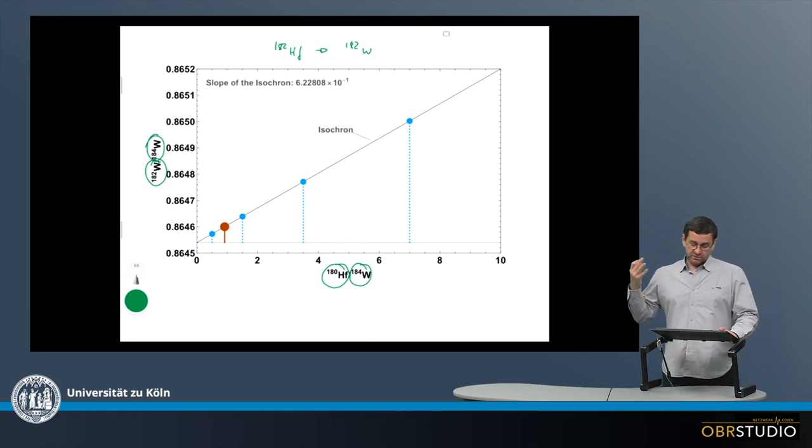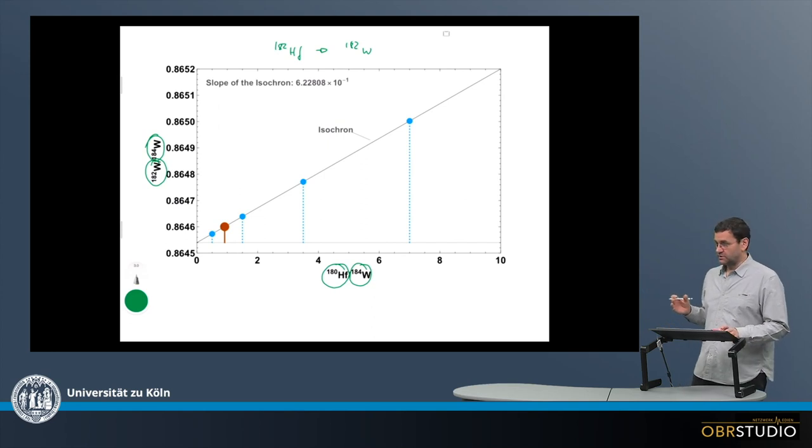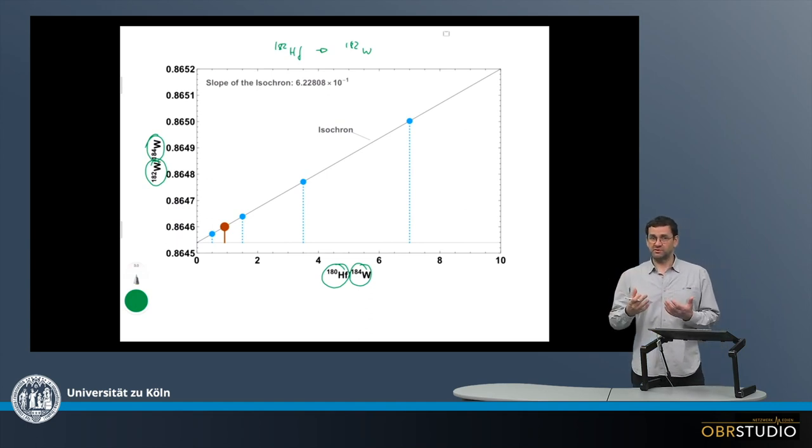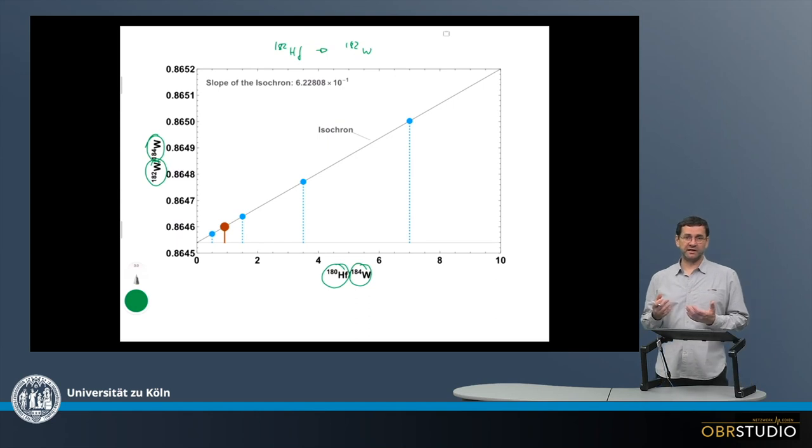So to obtain an isochron, we need to look at a rock that has various components, and these various components must have various Hafnium compositions or Hafnium-Tungsten ratios. So for this system, this can be straightforward.